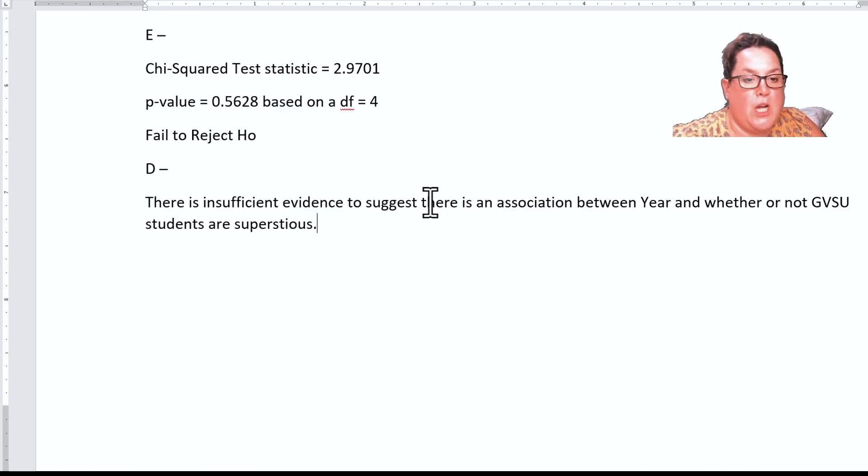Because we did not see evidence of a relationship or an association we would not continue on to do the post hoc. That is our discussion on how to do a chi-squared, our very first hypothesis test. See you in future videos.